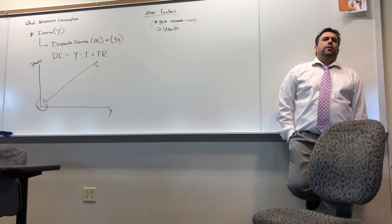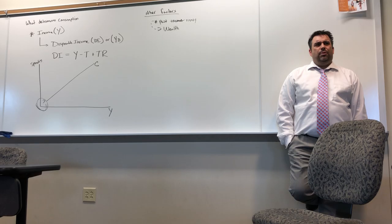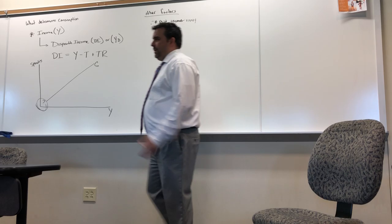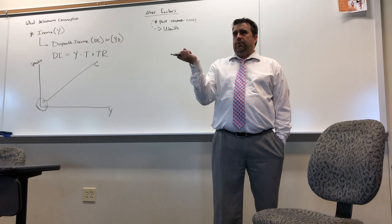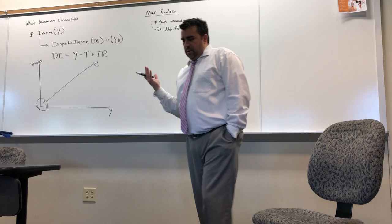We actually call this wealth. They abbreviate wealth as M — I don't know why they couldn't pick W; I guess we'd confuse it with wages, so they went with an upside-down W. Wealth could absolutely affect your spending. Another way you could spend with no income is to borrow it — that's what your credit card is effectively doing. Your decision to borrow money is based primarily on the interest rate; if you borrowed at a 65% interest rate, you aren't going to spend very much.